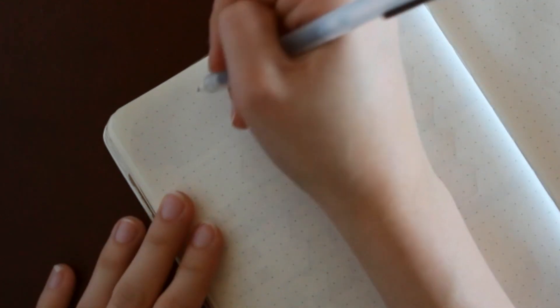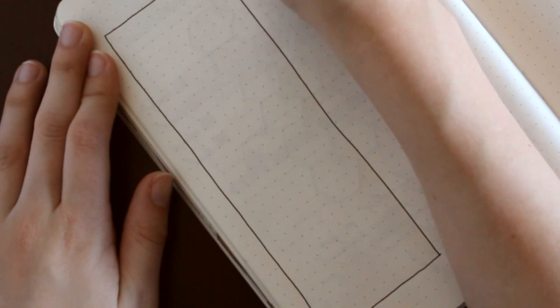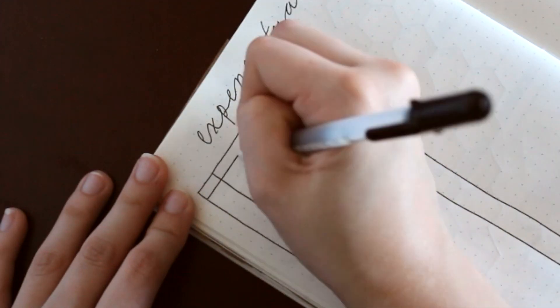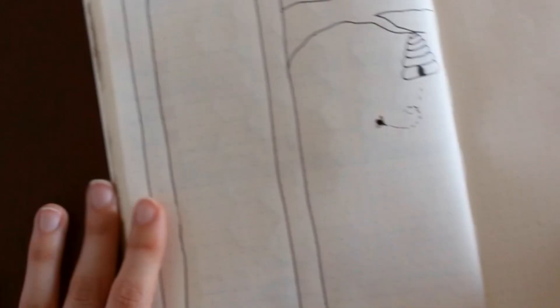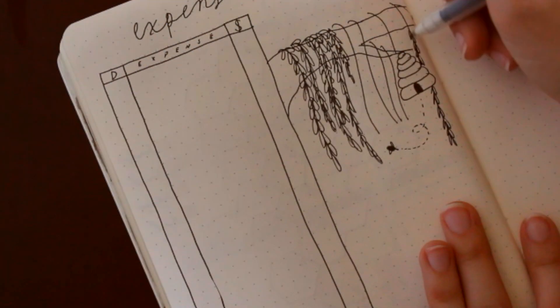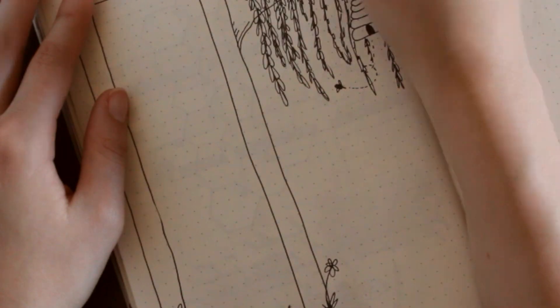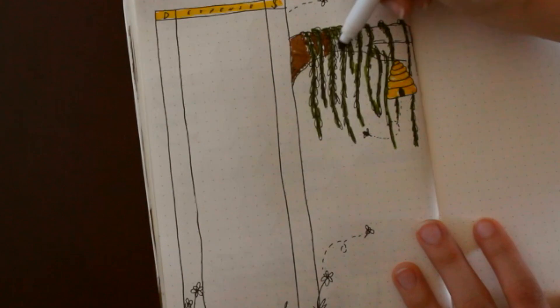And then next, I have my expense tracker on the left side of the page where I'm just doing a simple box with the date, the expense, and the price. I'm drawing a tree and then a beehive with a little bee coming out. And I do write bee happy on the bottom, but I totally did not take the opportunity to put two E's until later on, so forgive me.